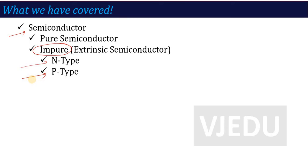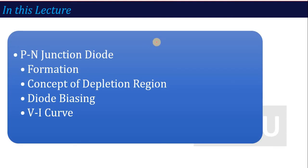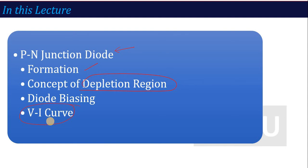Now that we know what n-type and p-type are, I am going to talk about the main topic — the p-n junction diode. How does the diode form? What is the concept of the depletion layer? And then we will talk about its V-I characteristics — when we apply voltage, how does the current vary? Let's start our lecture on the p-n junction diode.